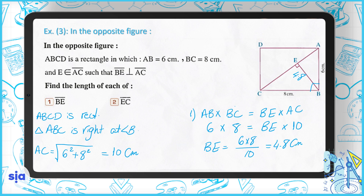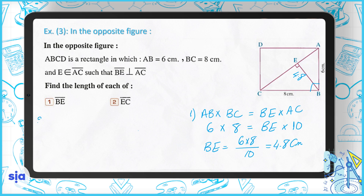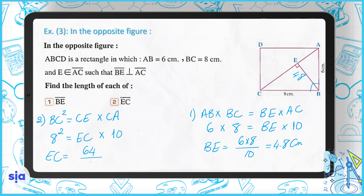The second part asks for EC. We know BC² = CE × CA. So 8² = EC × 10, giving 64 = EC × 10. Therefore EC = 64 ÷ 10 = 6.4 centimeters.